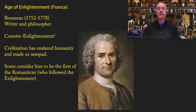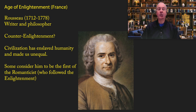One other thinker was extremely influential during this time, and it's quite controversial whether he was really part of the Enlightenment or part of a counter-Enlightenment: Jean-Jacques Rousseau, born in Geneva but doing most of his work in France. Whereas most Enlightenment thinkers viewed civilization as the highest form of humanity, Rousseau believed civilization had enslaved humanity, made us unequal, and created all our problems — so we need to return to our natural state. Many consider him the forerunner of Romanticism, which was in many ways a revolt against rationalism in favor of a more romantic, emotion-based view of humanity.